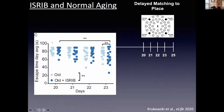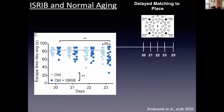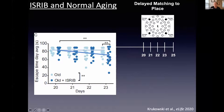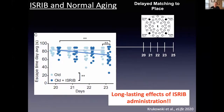Our old mice show almost no improvement over the four testing days from day 20 to day 23. But mice that received ISRIB — now 20 days after their last injection with no additional ISRIB — show improving performance over the four days such that by day four they are finding the escape tunnel significantly faster than their matched aged counterparts. This really demonstrates the long-lasting effects of this brief ISRIB treatment in aged animals.